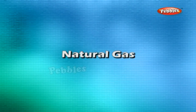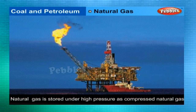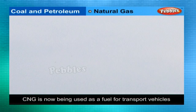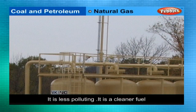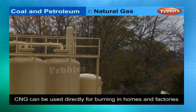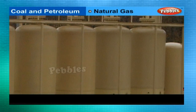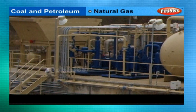Natural Gas: Natural gas is a very important fossil fuel. It is stored under high pressure as compressed natural gas, CNG. CNG is used for power generation and as a fuel for transport vehicles because it is less polluting — it is a cleaner fuel. CNG can be used directly for burning in homes and factories where it can be supplied through pipes. Such a network of pipelines exists in Vadodara, Gujarat, some parts of Delhi and other places.